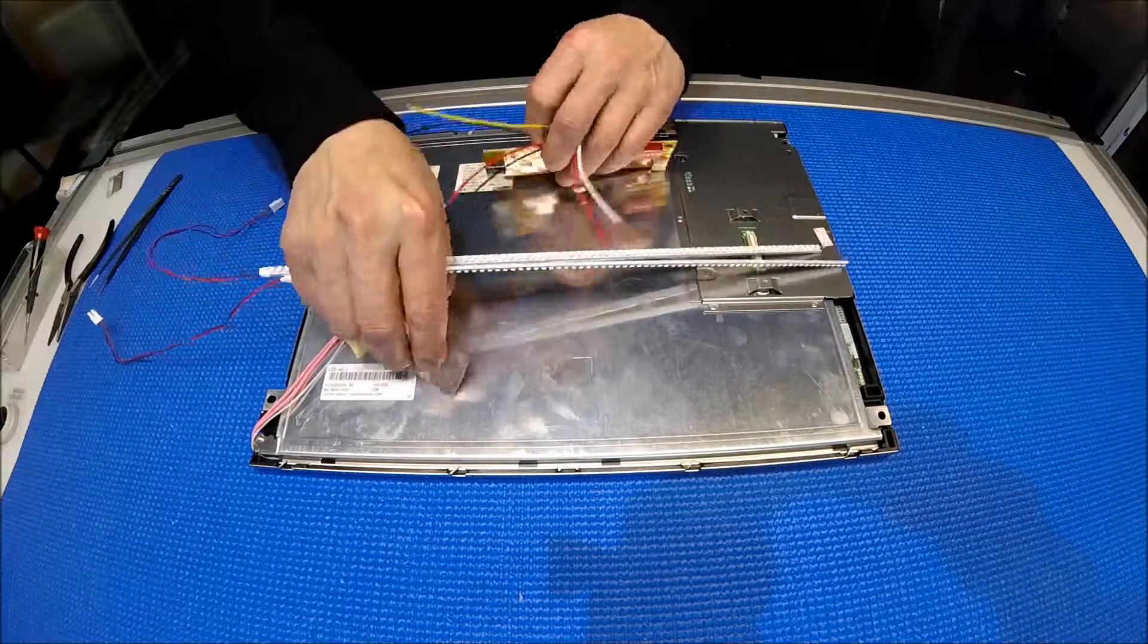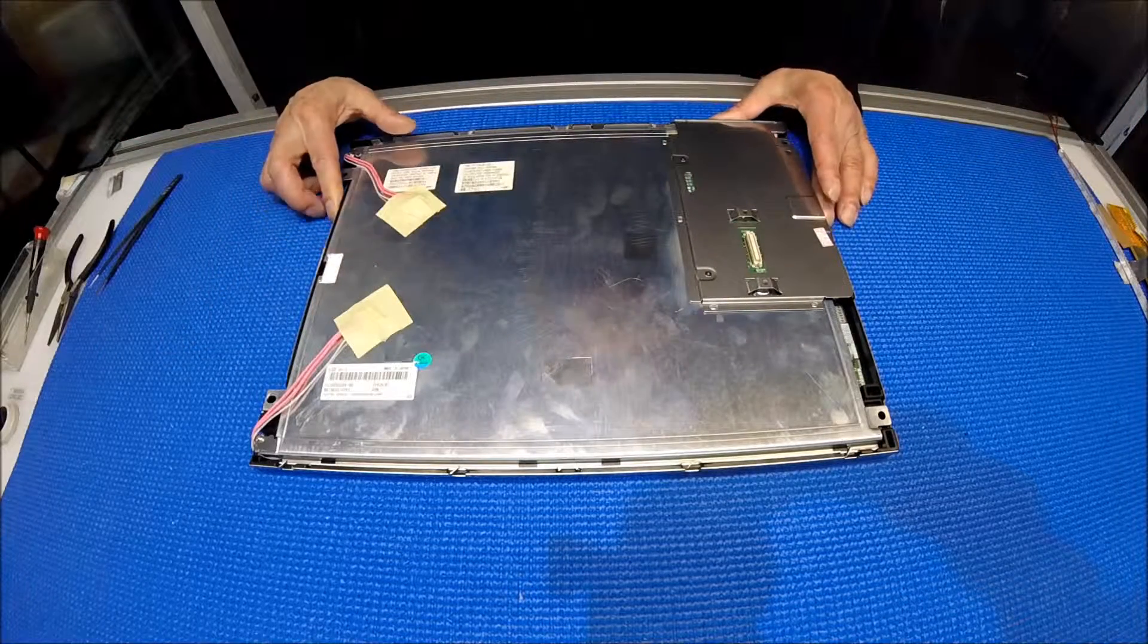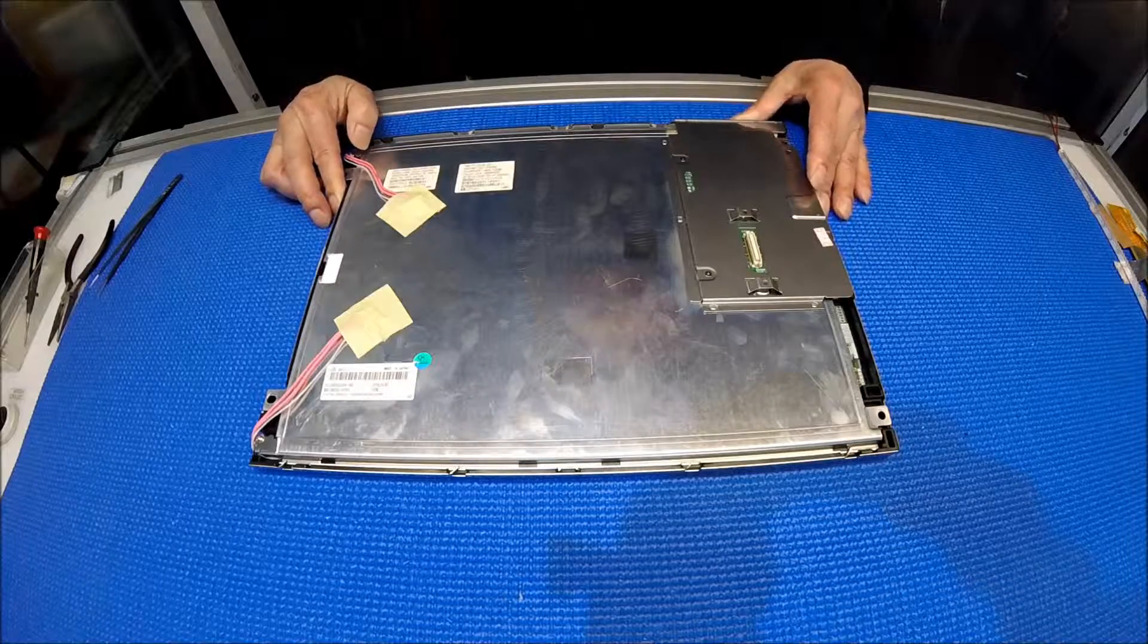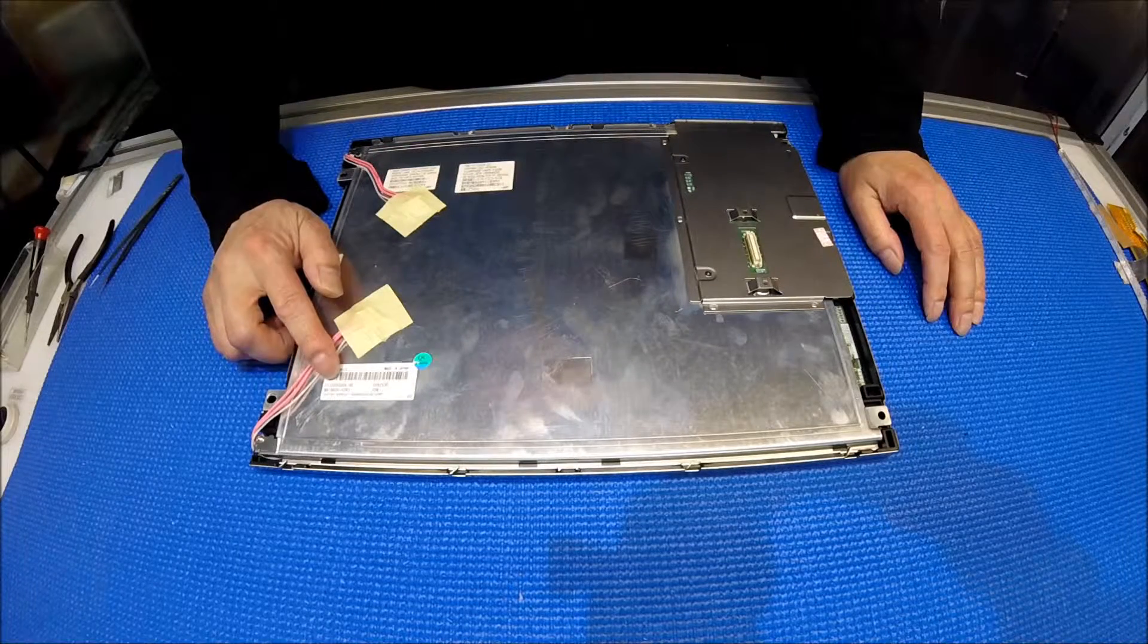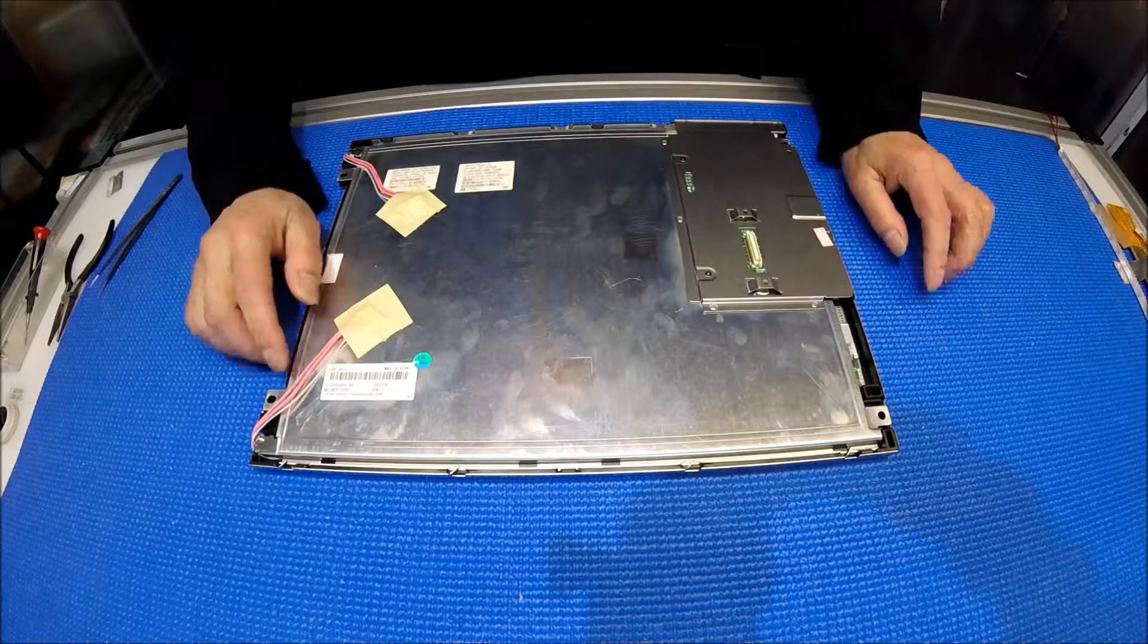Let's set aside the kit for a second and take a look at the screen. Again, this screen is made by Fujitsu. The screen part number is FLC38XGC6V-06. It's quite populous.